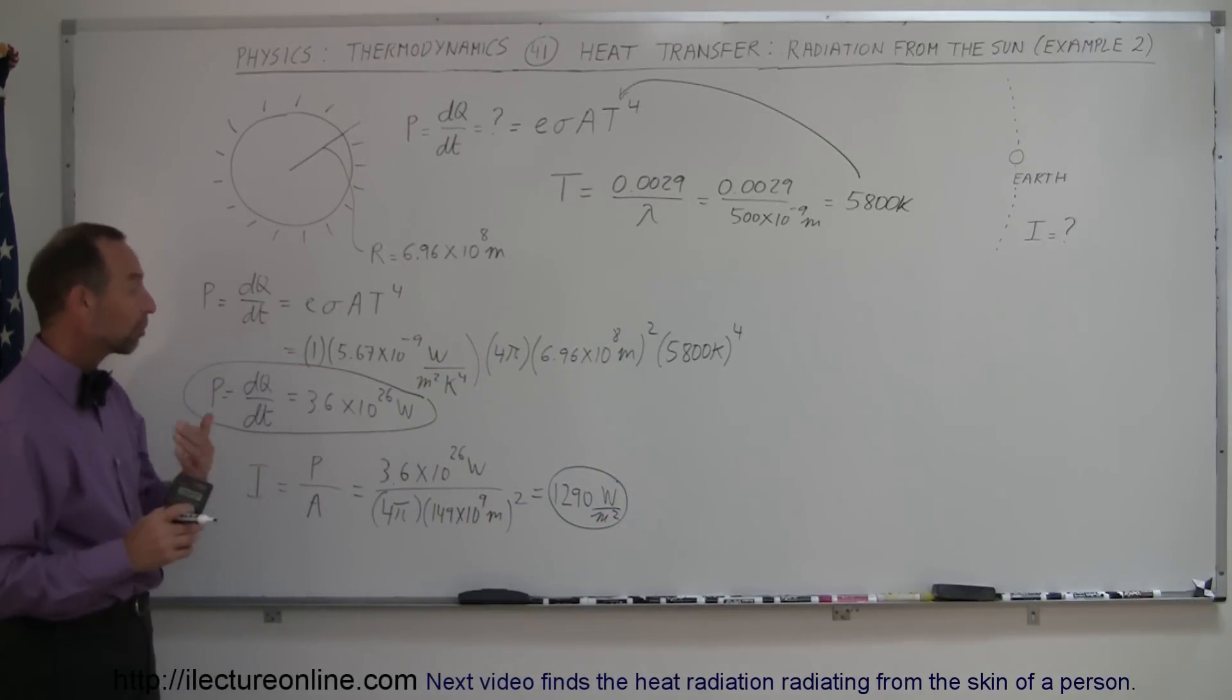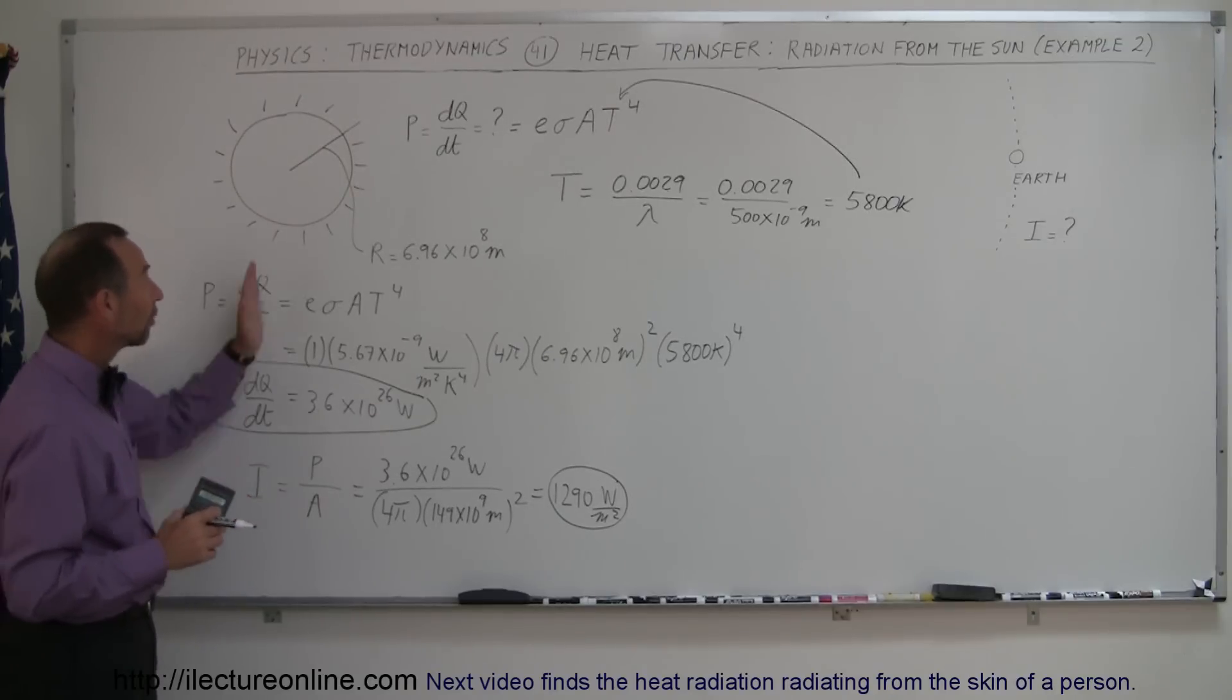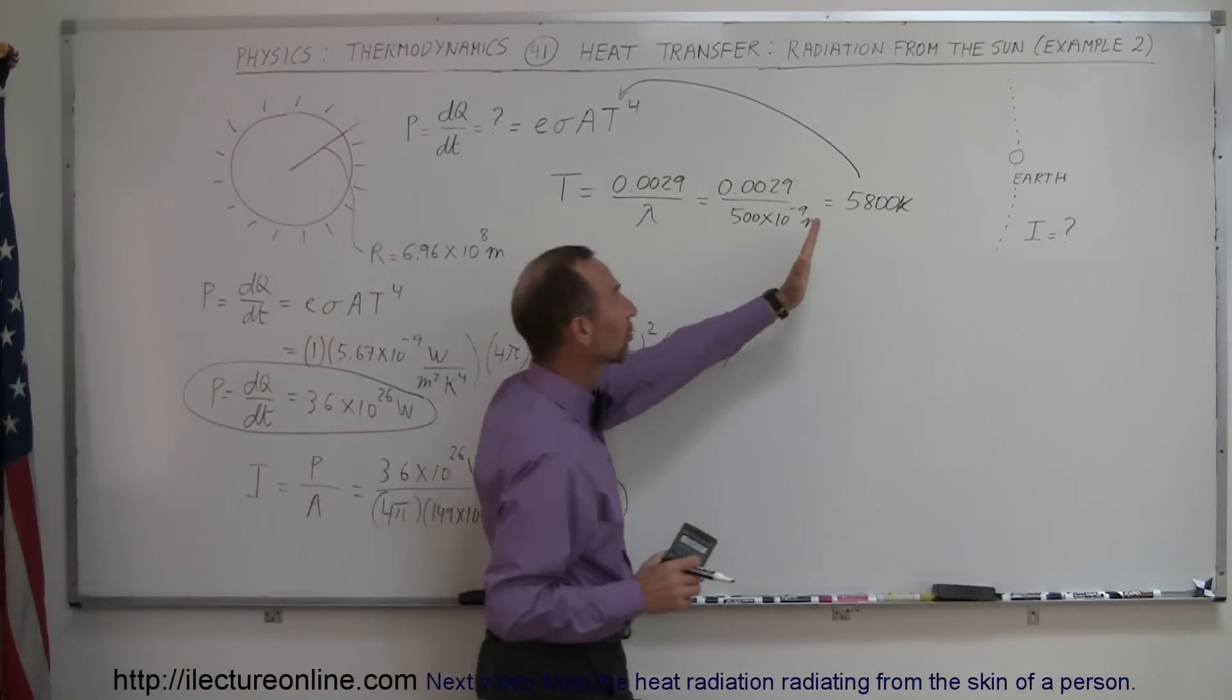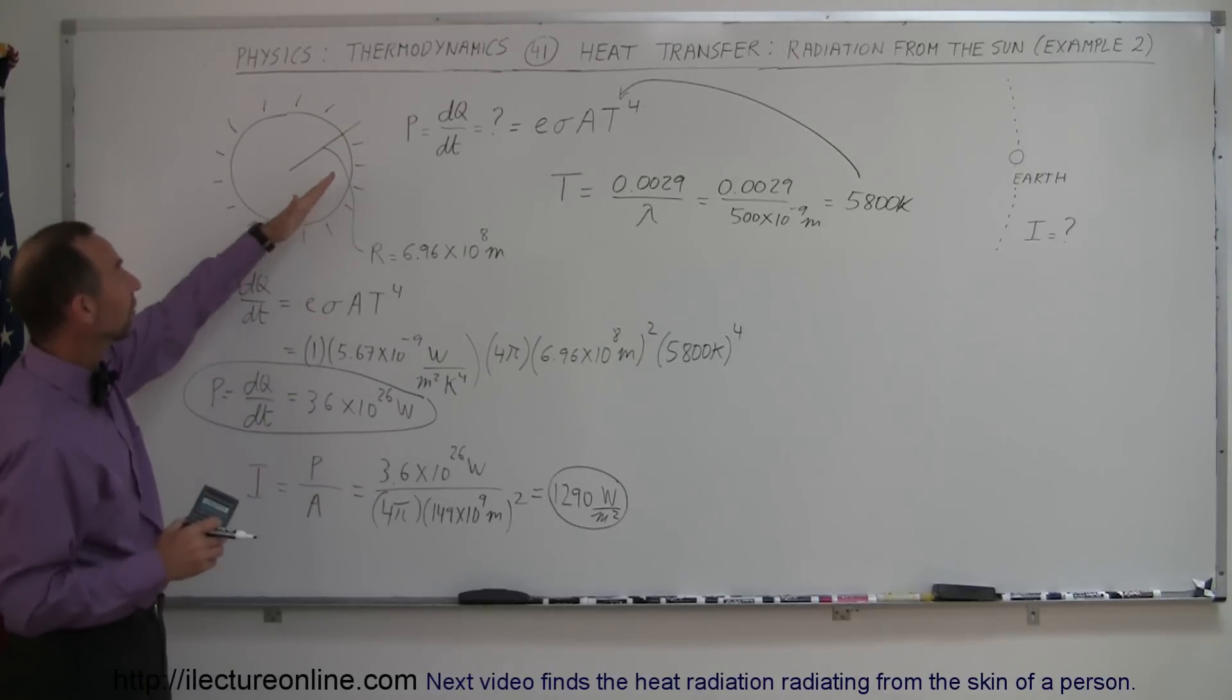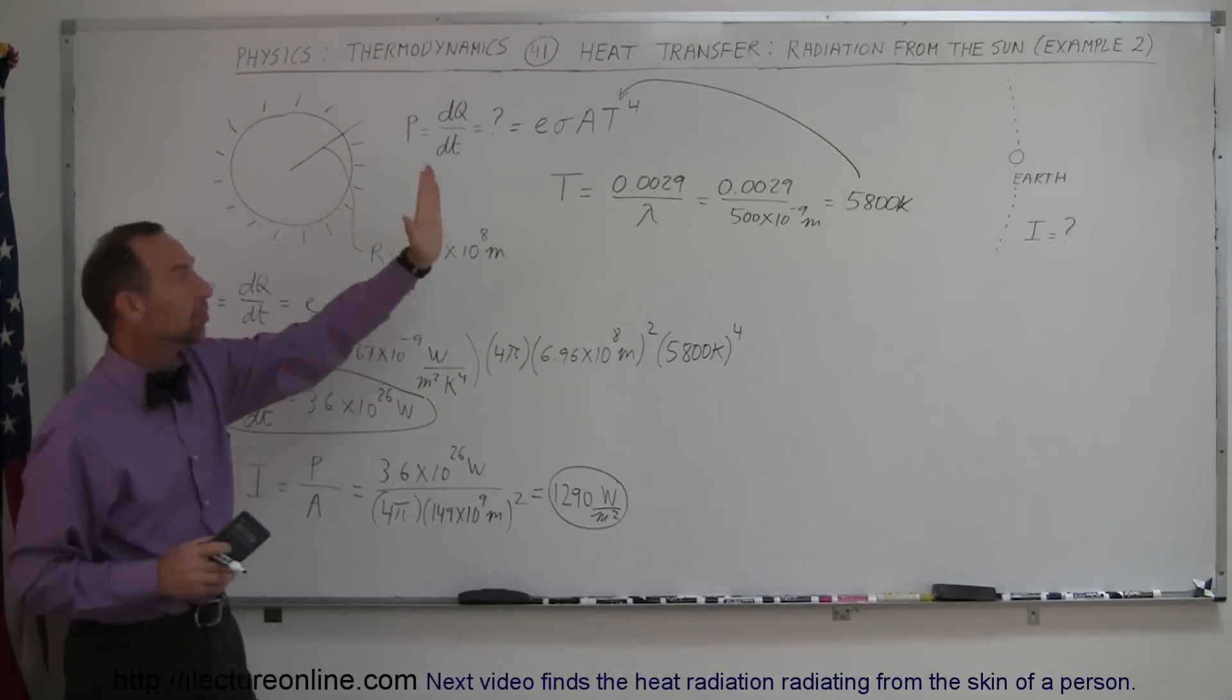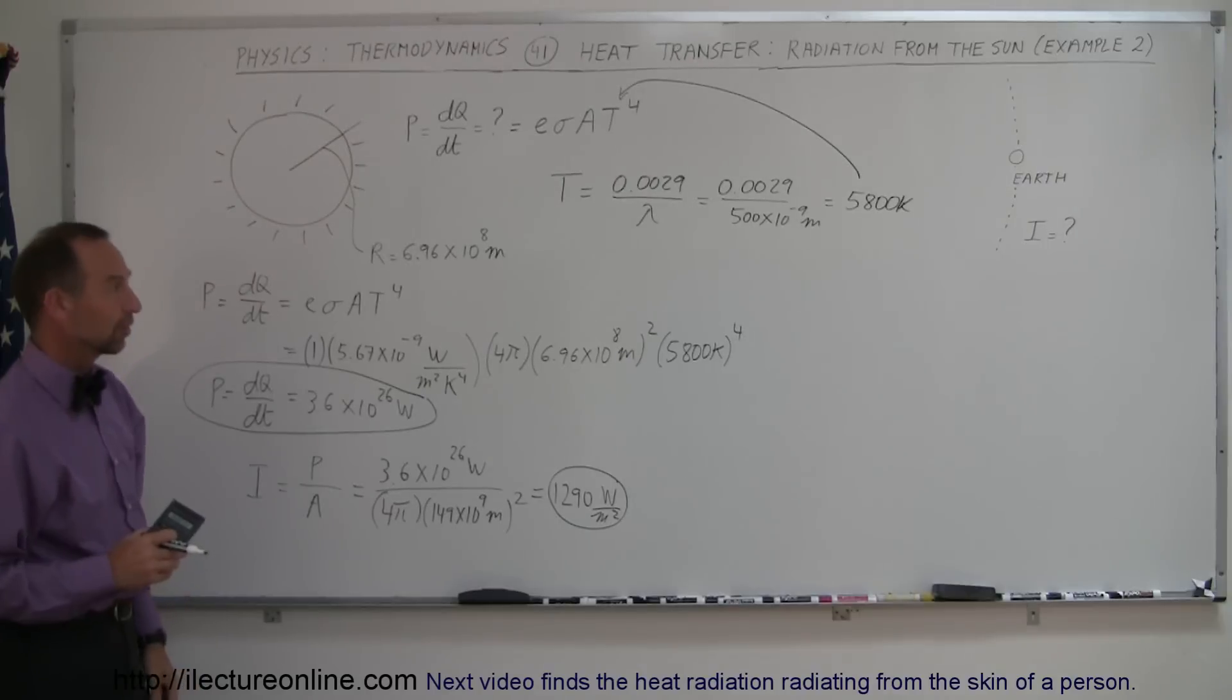So, that many watts per square meter is received at the Earth when the sunlight leaves the sun and reaches the Earth. All right, and that's how you calculate the heat generated by the sun and how much energy we receive by the time it gets on the Earth or the intensity of the light by the time it reaches the Earth.